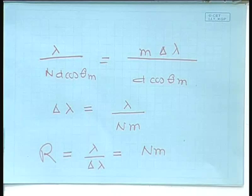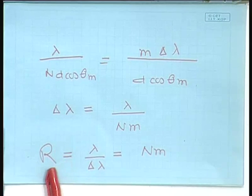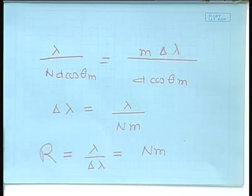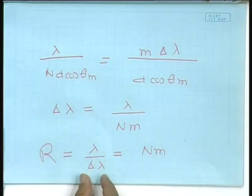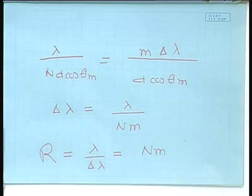The larger the chromatic resolving power, the better the diffraction grating is at distinguishing two close wavelengths. This quantifies the ability of a grating to resolve two different wavelengths: the chromatic resolving power is essentially the inverse of the minimum resolvable wavelength separation relative to the central wavelength.